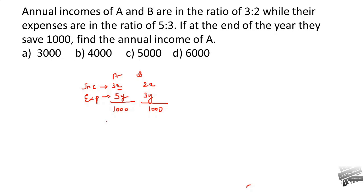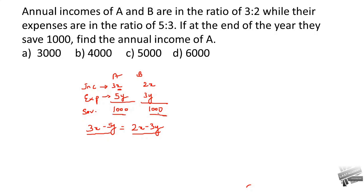Income minus expenses equals savings. So savings of A is 3x minus 5y, and savings of B is 2x minus 3y. Both save 1000 each, so 3x minus 5y equals 2x minus 3y equals 1000.